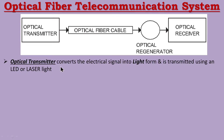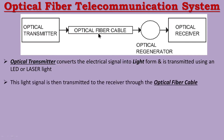Using LED light and laser light, you can switch the light on and off to represent digital information. By switching the light on and off, the signal is transmitted through the optical fiber cable.